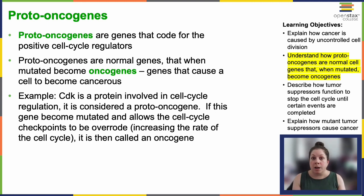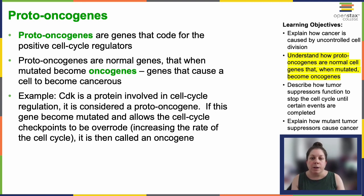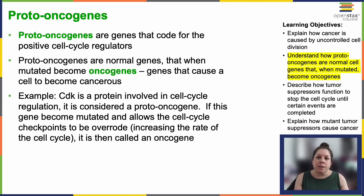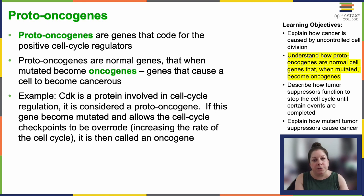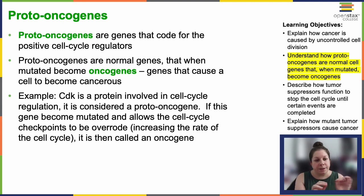But sometimes one of these mutations will happen in a hyperactive positive regulator, like CDK — cyclin-dependent kinase — a protein that activates other proteins. When that happens, it can cause the cell to push past checkpoints too early. Like we mentioned, the cell cycle speeds up and you lose that pause point where everything gets checked and made sure that it's right.